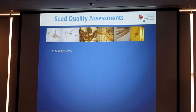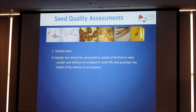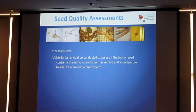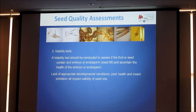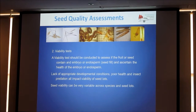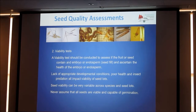The next assessment you should do is viability tests. You're looking at two things: one, to see whether your fruit, your floret, or whatever actually contains embryonic material; and also checking the health. There are a number of factors that can affect this — obviously environmental conditions, storage conditions, seed production — they all affect viability. It can be quite variable across species and individual seed lots depending on conditions. Never assume that all seeds are going to be viable and capable of germination.